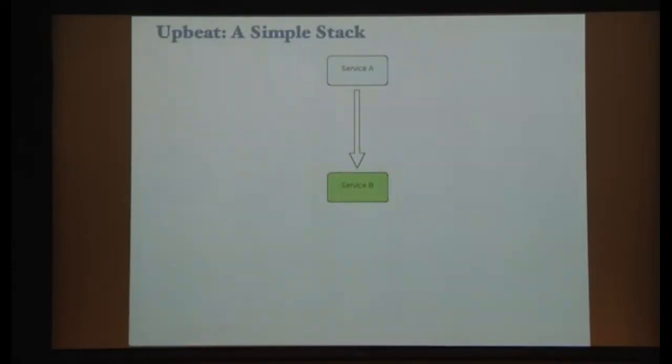So Upbeat. Let me explain the justification we have for writing Upbeat. So in a very simple stack, you have, you'd have two services, right? Service A could be your web service. Service B could be a database. It could be your search server or whatever. Obviously, this doesn't scale. You need more machines to scale and have availability. So you put a load balancer in between. Pretty simple.